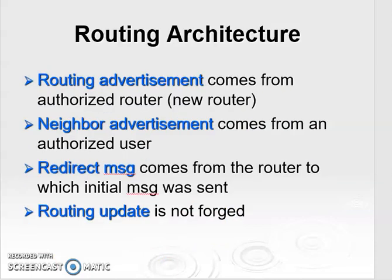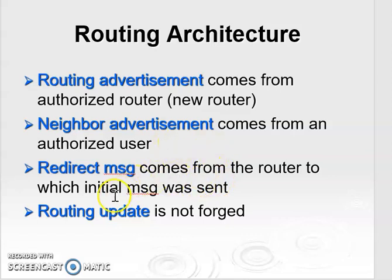IPsec also plays an important role in routing architecture. It can assure that router advertisements come from authorized routers, that neighboring relationships are only established with authorized routers, and that redirect messages come from the router to which the initial IP packet was sent, ensuring routing updates are not forged. Without such security measures, an opponent can disrupt communication, so these IPsec security features can be employed.